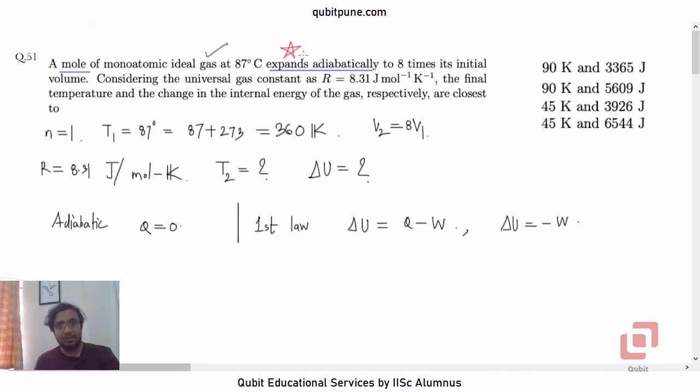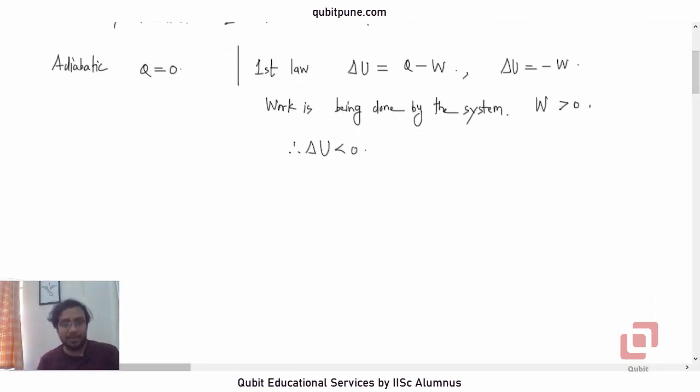Now work is being done by the system because it is expanding adiabatically. Its volume is increasing, so the change in internal energy will be negative. Work is being done by the system, so work will be positive by convention, and delta U = -W, so delta U will be negative.